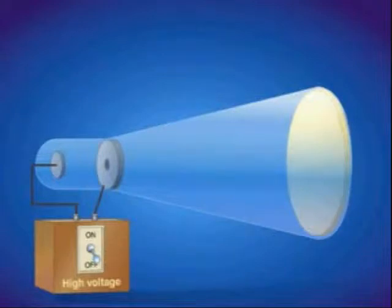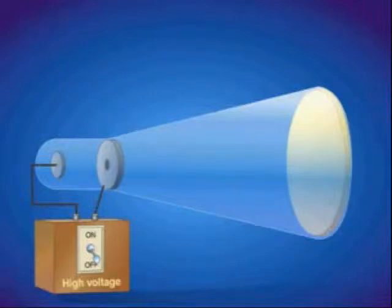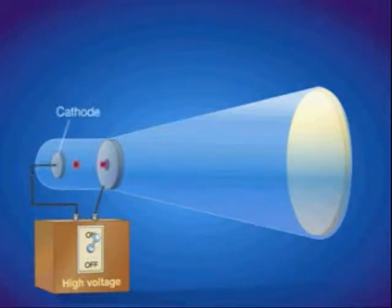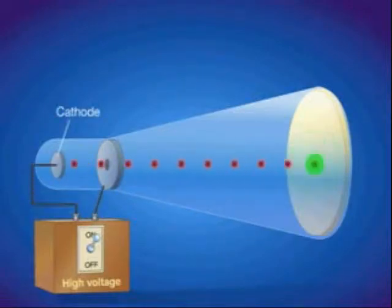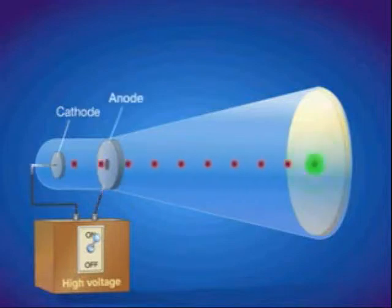A cathode ray tube is the forerunner of the television tube. It is a glass tube from which most of the air has been evacuated. When the two metal plates are connected to a high-voltage source, the negatively charged plate, called the cathode, emits an invisible ray. The cathode ray is drawn to the positively charged plate, called the anode, where it passes through a hole and continues traveling to the other end of the tube.